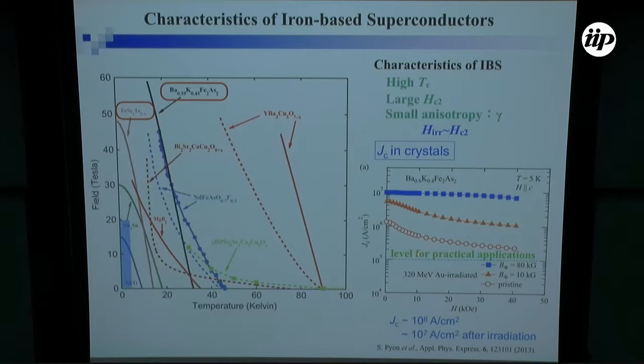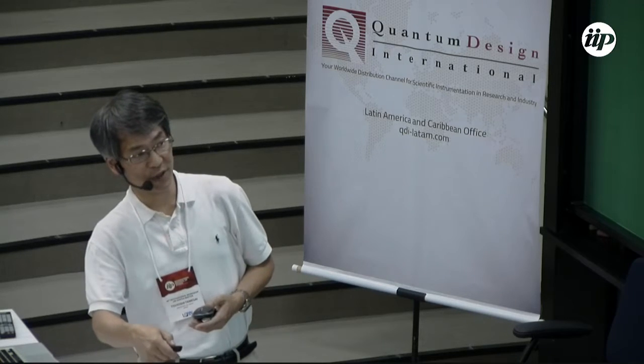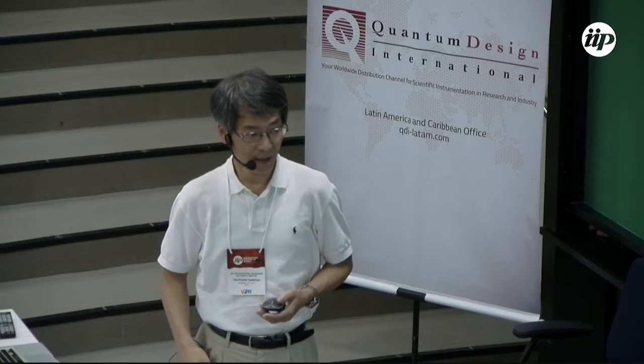Of course, what we are interested in is the critical current density in these crystals. Professor Marr explained to you in the case of tapes, but in single crystals, we have already achieved more than 10 to 6, 1 mega-amps per square centimeter in the pristine state, and after irradiation, it can go up to more than 10 mega-amps per square centimeter at 5 Kelvin.